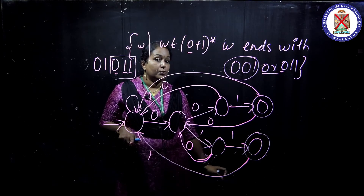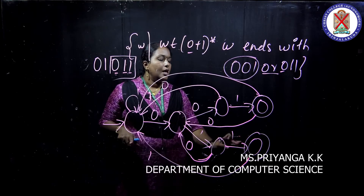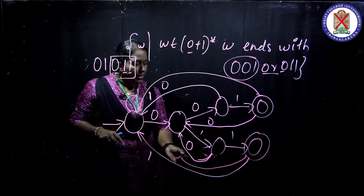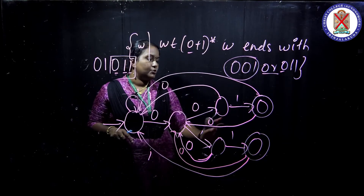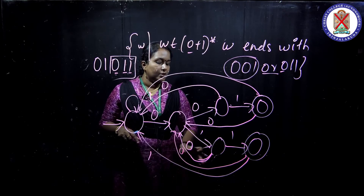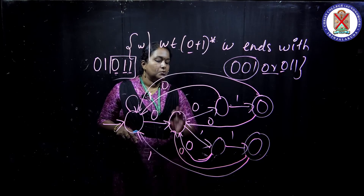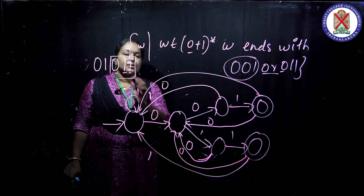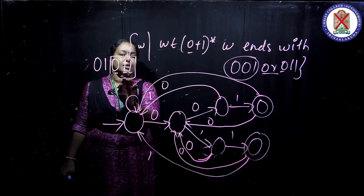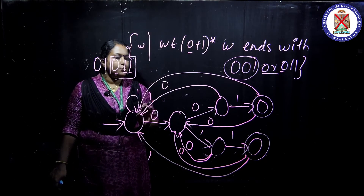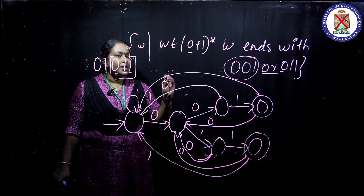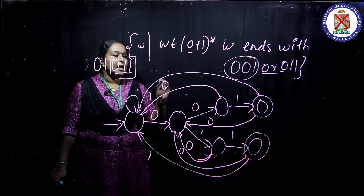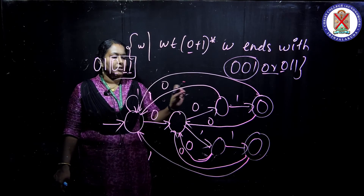When 0 comes here, we move to two states backward because we are checking for an even number of 1s and 0 must be succeeded by two 1s — that is why the trick works 90% of the time. But in some problems you must carefully check the strings to get the correct understanding.